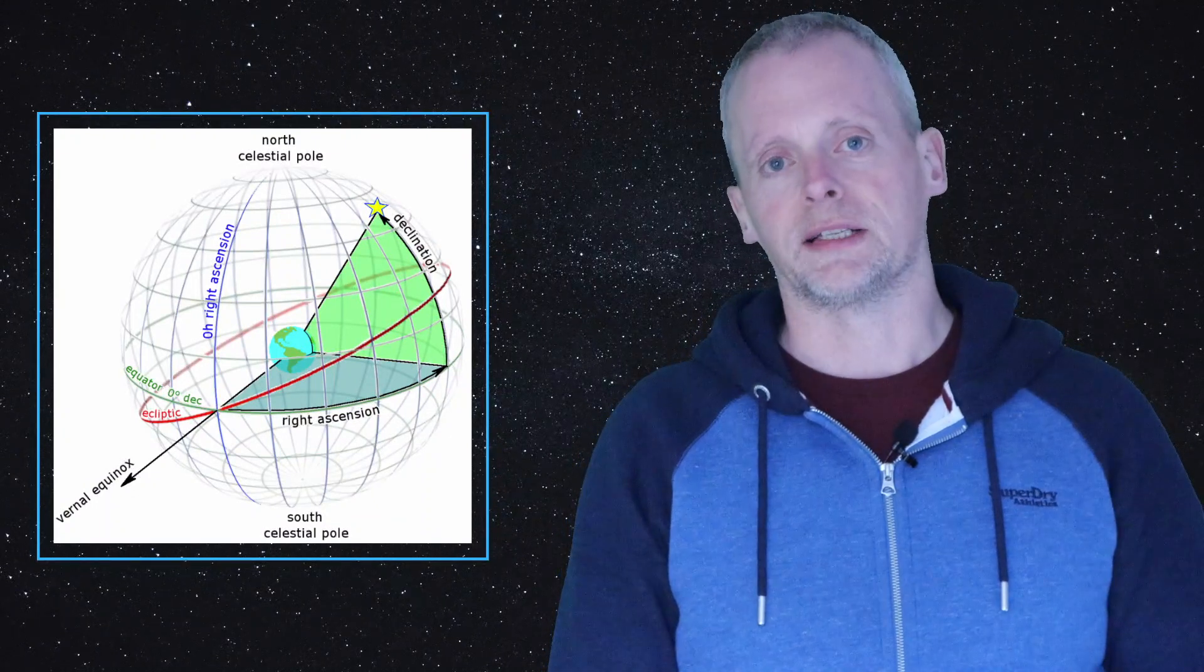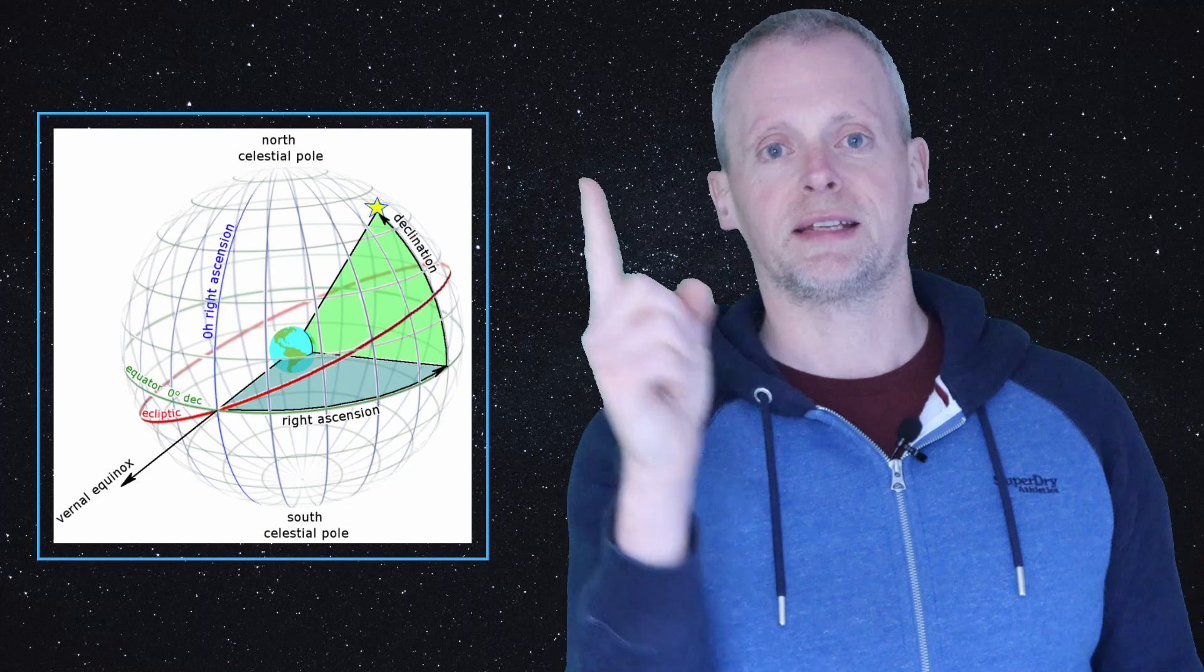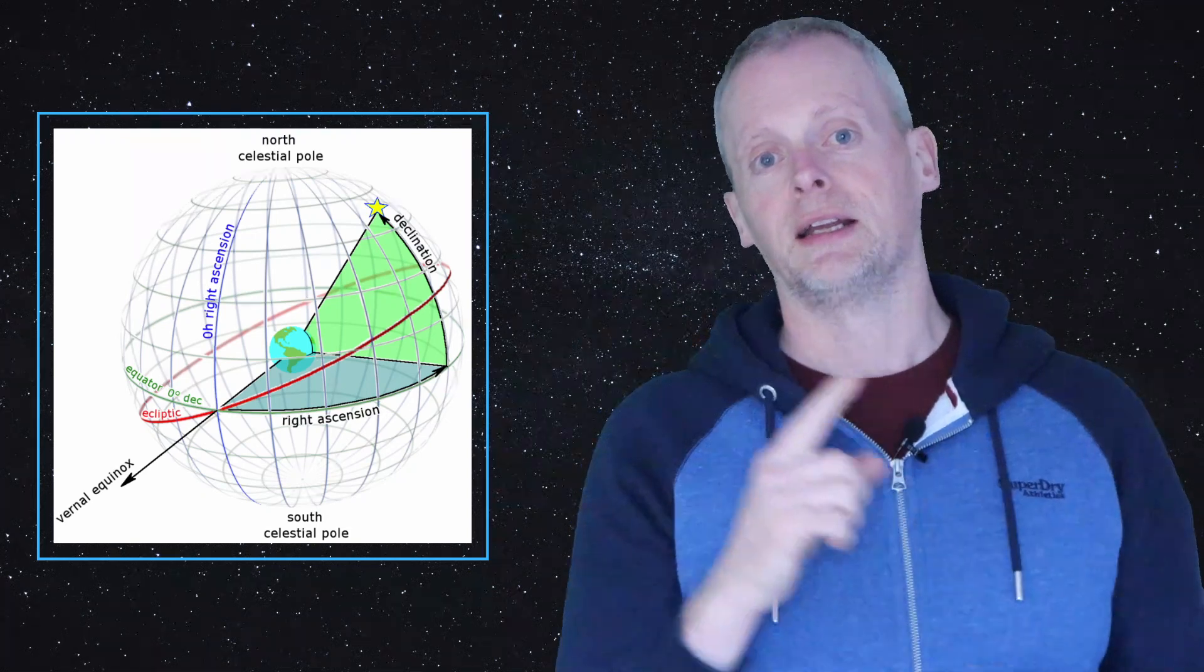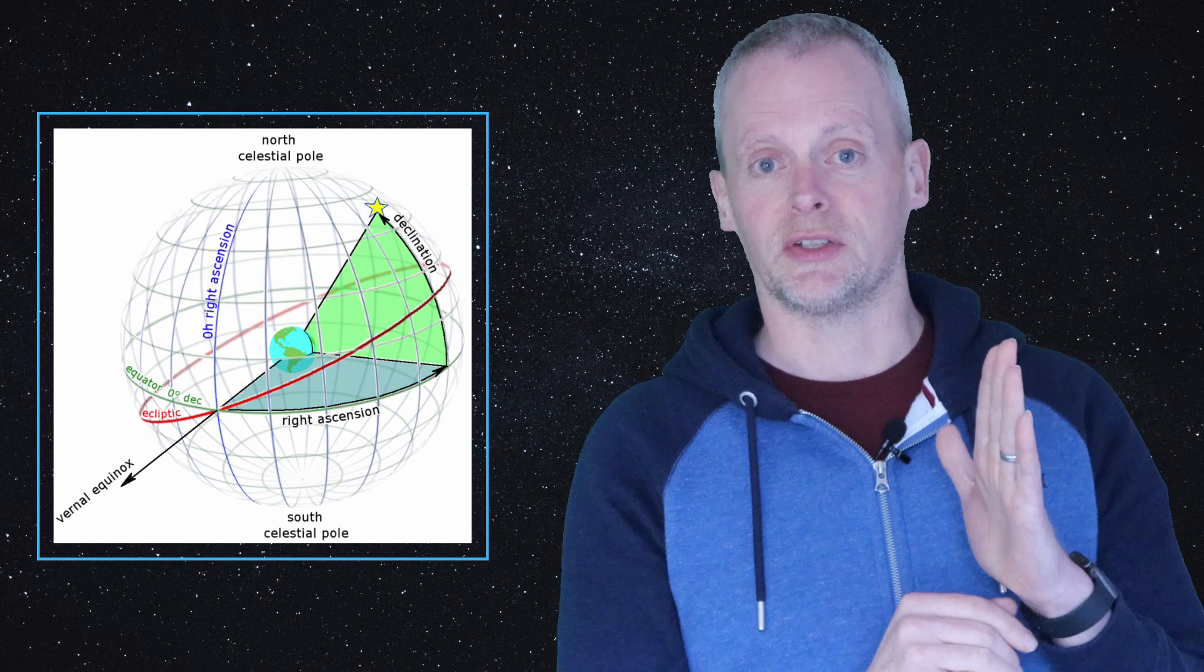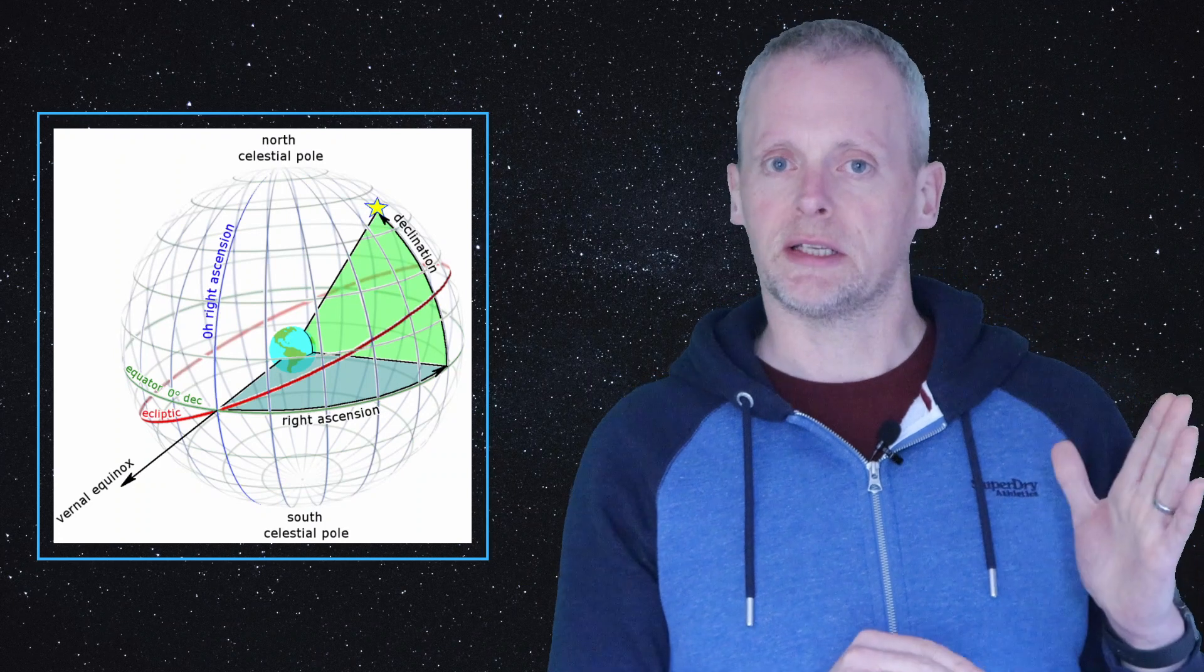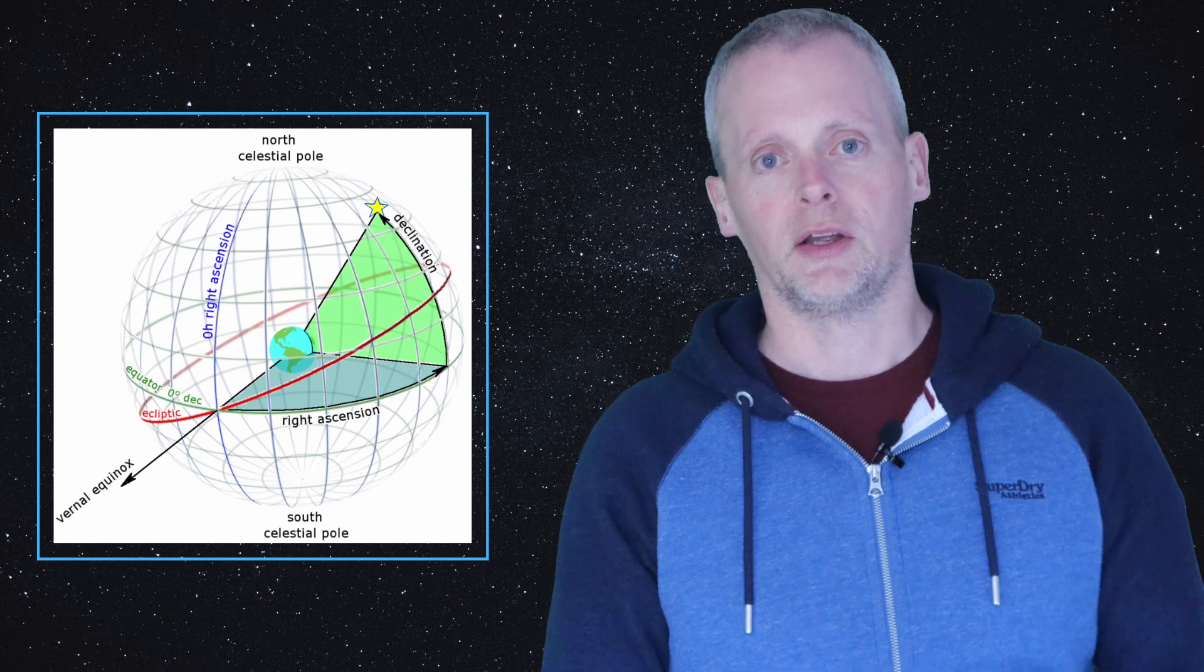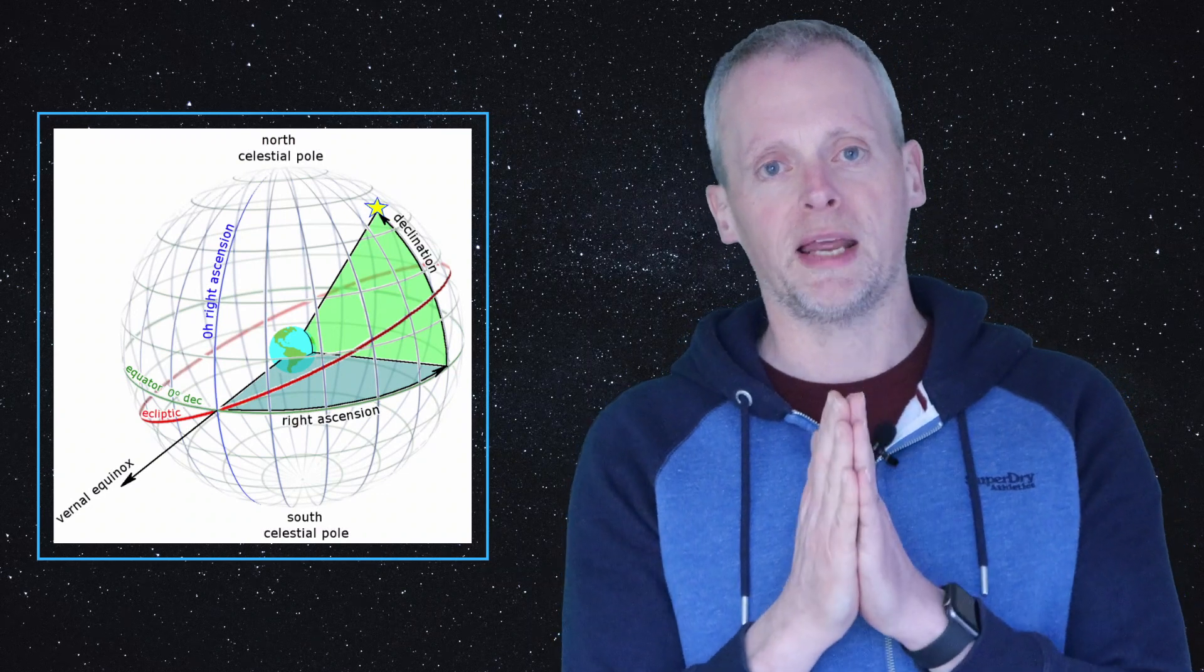Lines of right ascension join the north celestial pole in a sphere to the south celestial pole, and they are split in hours around the globe beginning at zero hours. We then have one, two, three, four, five, and so on every 15 degrees till we get to 24 hours, except we don't get 24 hours because there isn't one. We start at zero and we get to 23:59:59. Right ascension is measured in hours. An hour is split into 60 minutes, and those 60 minutes are split into 60 seconds. So right ascension is a number of hours from zero, then a number of minutes, and then a number of seconds which gives you a precise point around the celestial sphere.